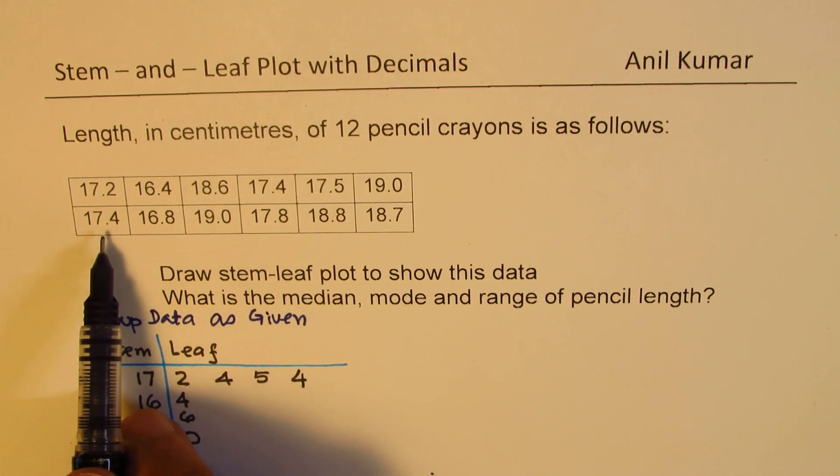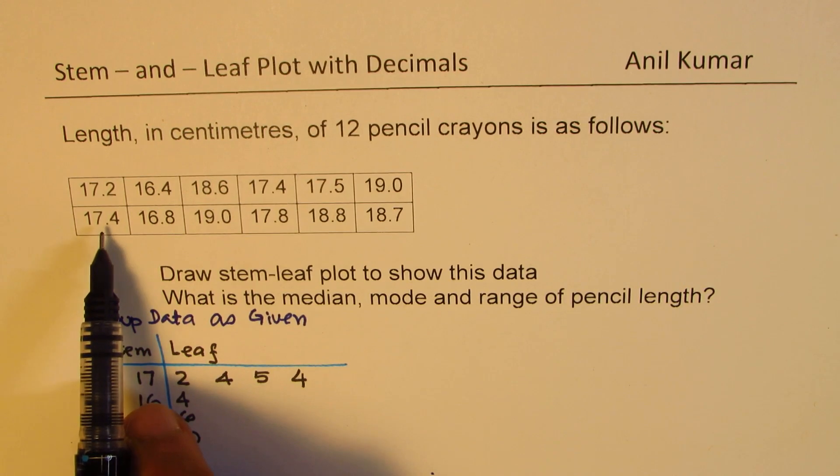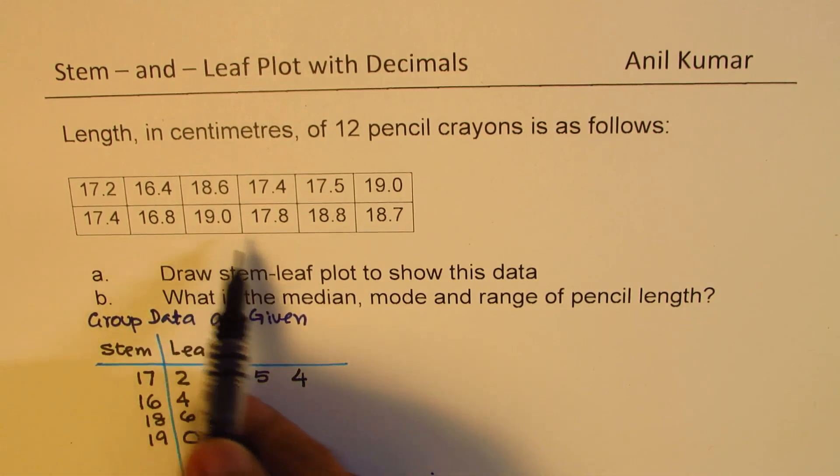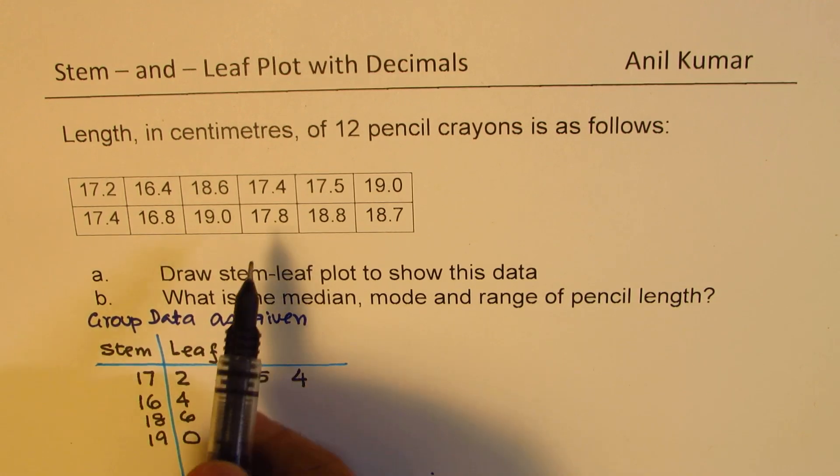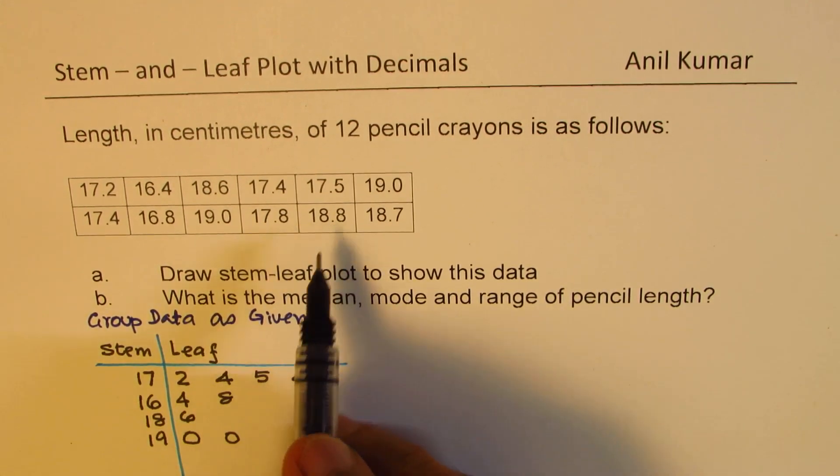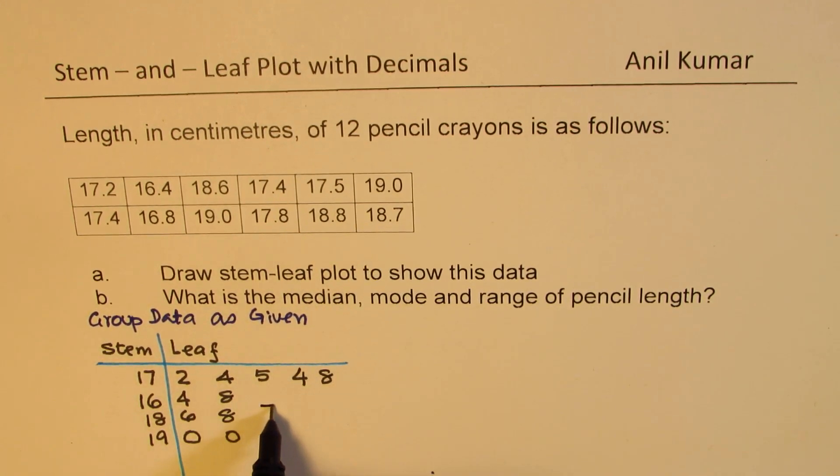If there is already a value given, you have to place another one. This represents the next data with the same value. 16.8, so there it goes. 19.0, another 19.0, 17.8 there it goes. 18.8 right there. 18.7.